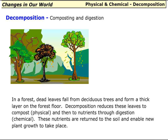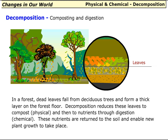Decomposition, composting, and digestion: in a forest, dead leaves fall from deciduous trees and form a thick layer on the forest floor. Decomposition reduces these leaves to compost and then to nutrients through digestion. These nutrients are returned to the soil and enable new plant growth to take place.